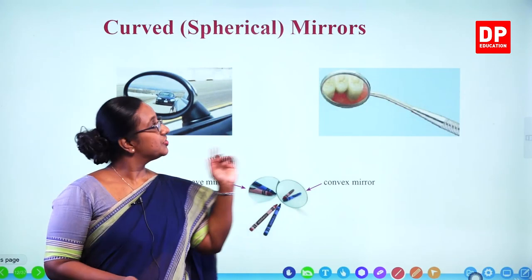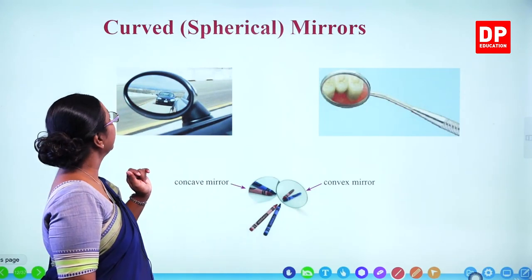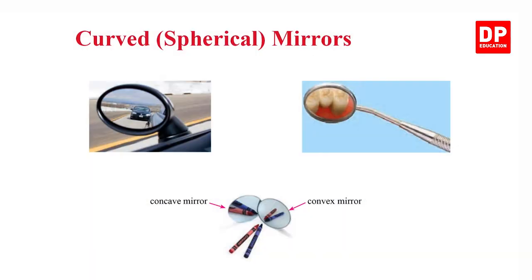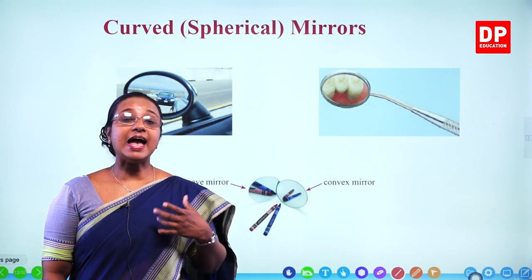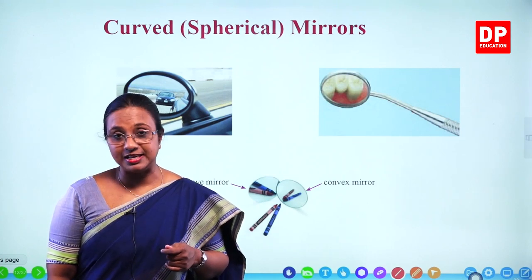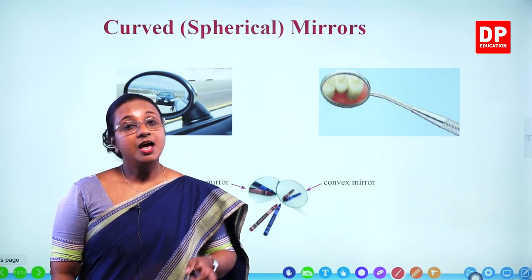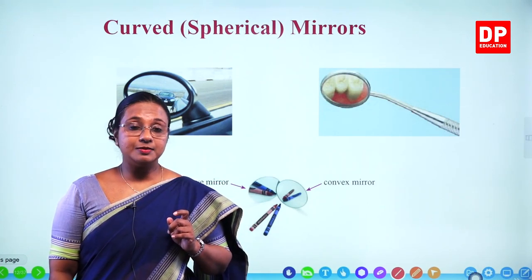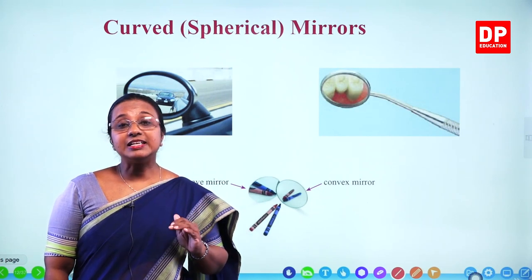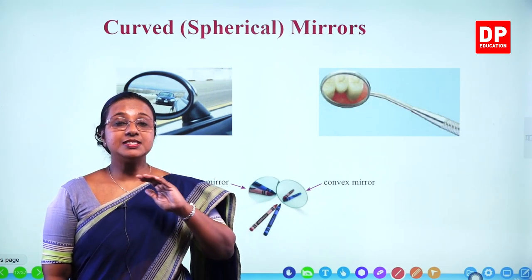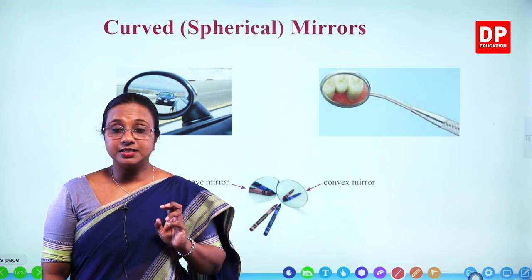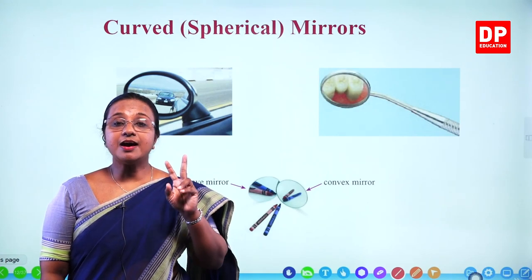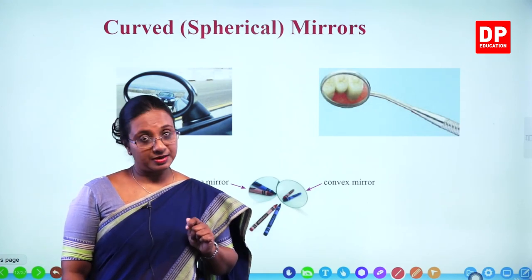Now we are going to discuss curved or spherical mirrors. You are very familiar with plane mirrors and how they form images. When we say spherical mirrors, the reflective surface is curved. Because of this curve, there are two main types of mirrors.